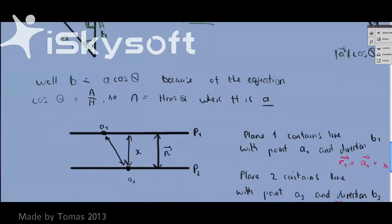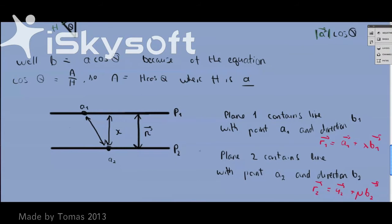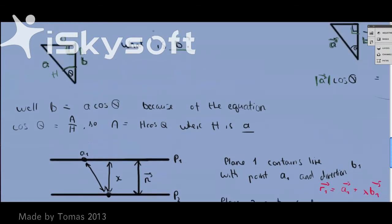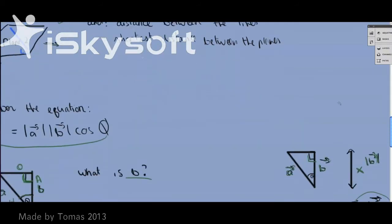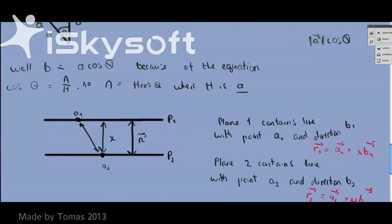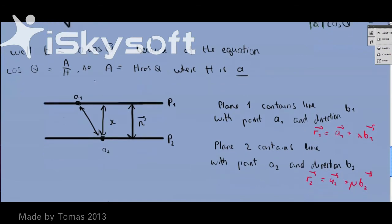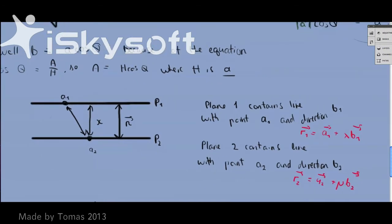Alright, so next thing, let's say we had these two planes again, just like up here, plane 1 and plane 2. Okay, so we have these two planes, this is plane 1, plane 2, and this is the distance between them, and this is what we're looking for, and let's say plane 1 contains line with point A₁ and direction B₁, and plane 2 contains line with point A₂ and direction B₂.